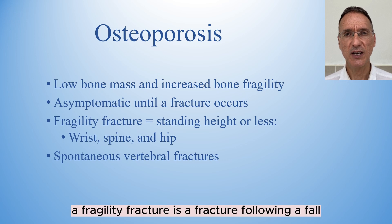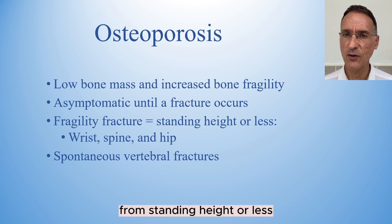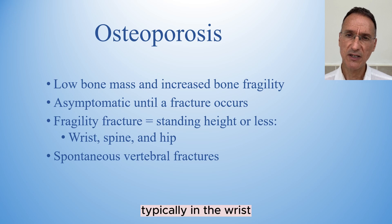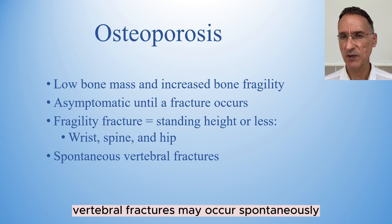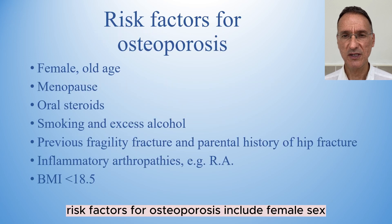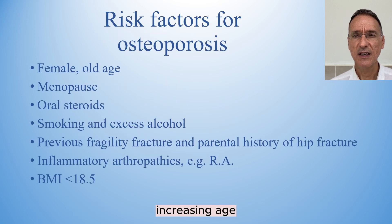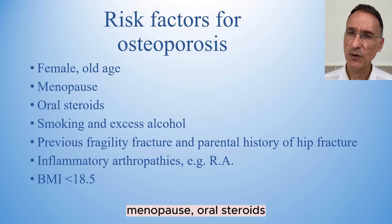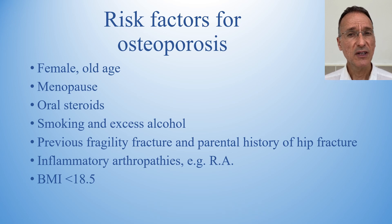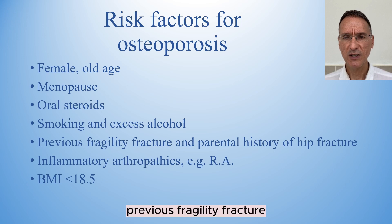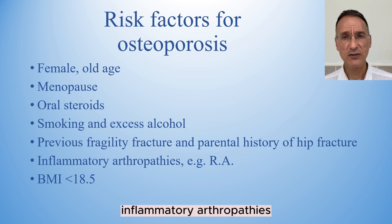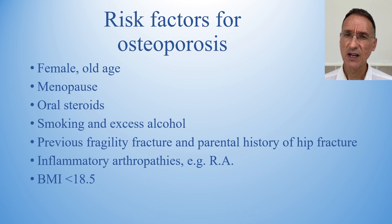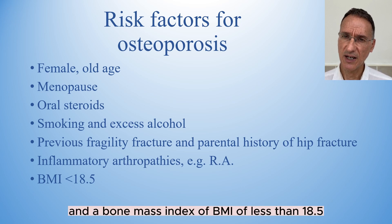A fragility fracture is a fracture following a fall from standing height or less, typically in the wrist, spine, and hip. Vertebral fractures may occur spontaneously. Risk factors for osteoporosis include female sex, increasing age, menopause, oral steroids, smoking and excess alcohol, previous fragility fracture or parental history of hip fractures, inflammatory arthropathies such as rheumatoid arthritis, and a BMI of less than 18.5.